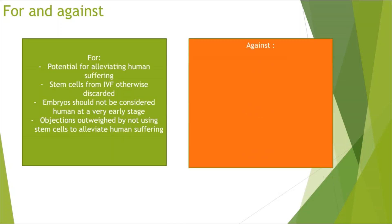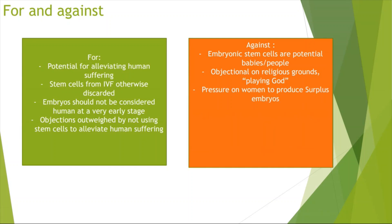Now looking at the other side of using stem cells, it can be argued that embryonic stem cells are potential babies, they will eventually go on to become babies, become a life, and that's why it should not be used. There's also objection on religious grounds. People who have religious beliefs may argue that by using stem cells we are taking a life, we are playing God. Now pressure on women might be added to produce surplus embryos so that more stem cells could be gained from it.